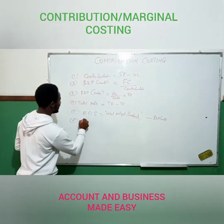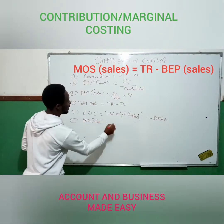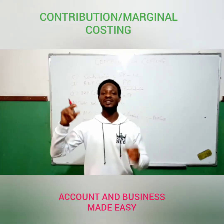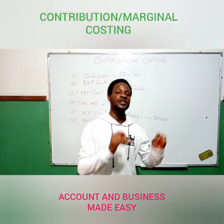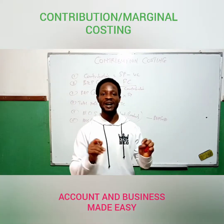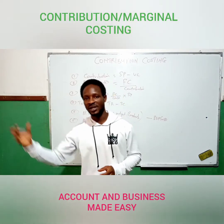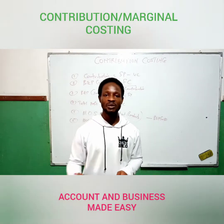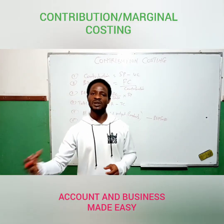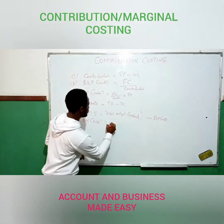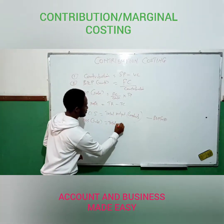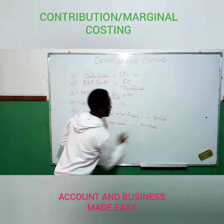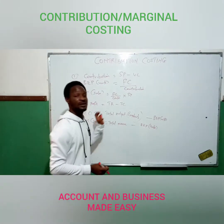Margin of safety in sales is the total sales that may fall below total sales revenue while you still avoid loss. That means from the total sales, if you are not able to make the total sales, by how many can you go below the total sales and still avoid loss? That is total revenue minus break-even point in sales, which gives us margin of safety in sales.